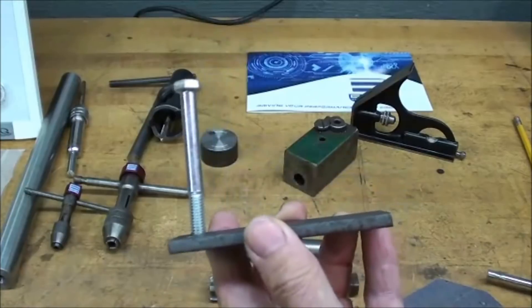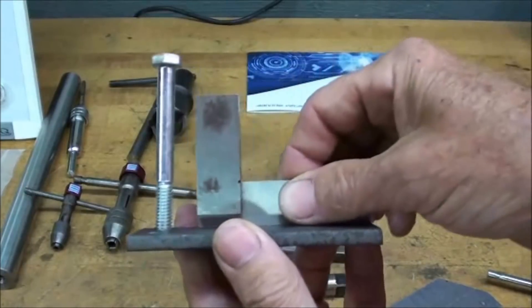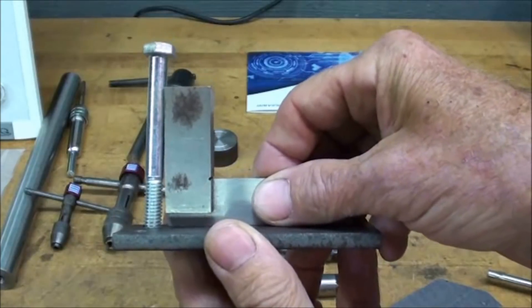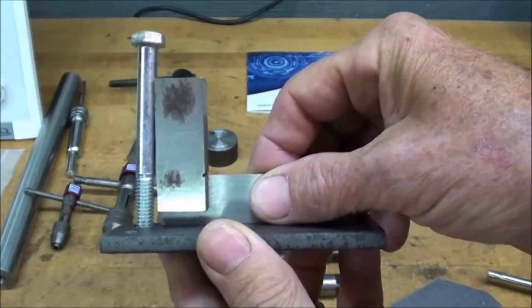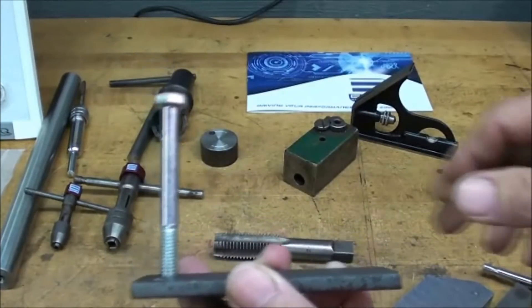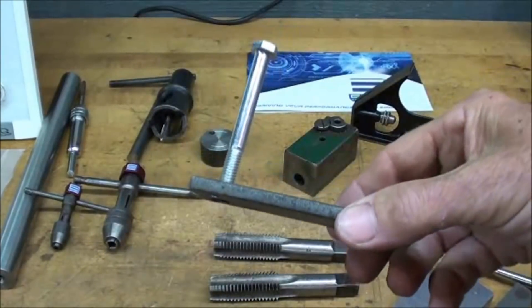So here's a piece that I have tapped crooked. I did this on purpose but notice when I hold a square up to it that we're off considerably. Even though you have drilled a straight hole, it's possible to tap it crooked by just being careless.